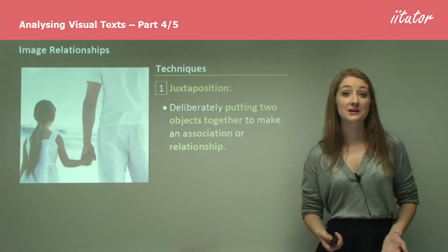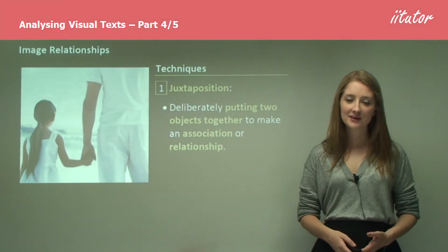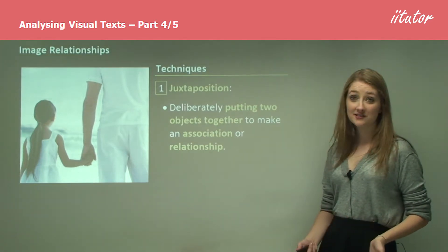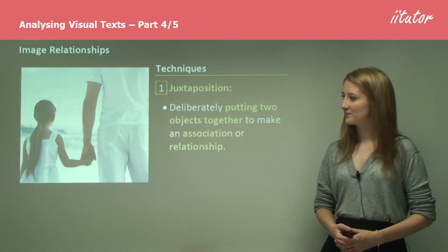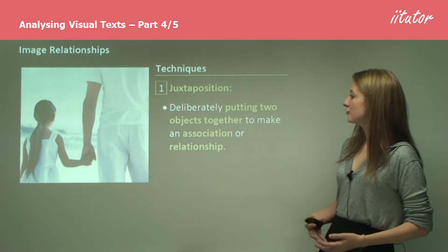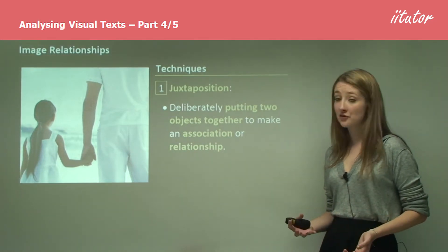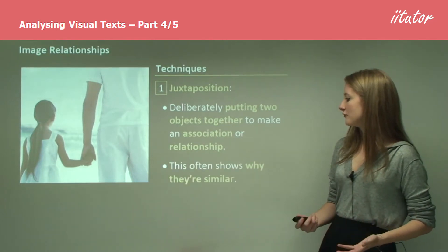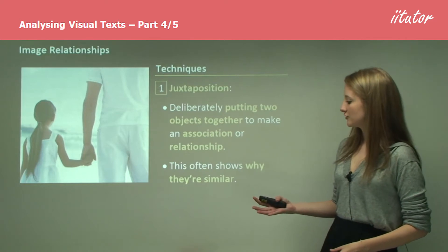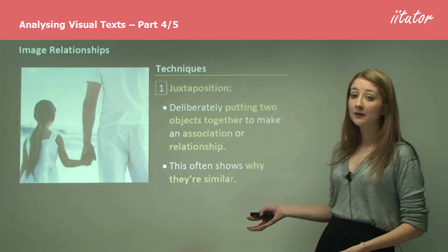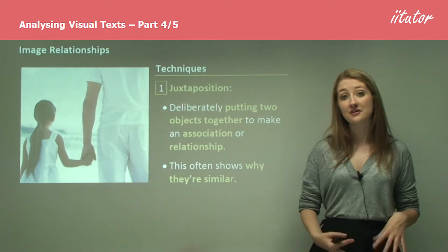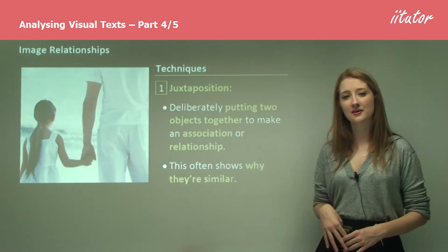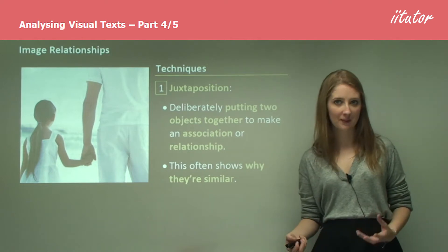Image relationships are another really important element of deconstructing visual texts. So let's look at some specific techniques. Juxtaposition is when you deliberately put two objects together to make an association or relationship. This often shows why they're similar. So in this picture, for example, the tall man with the small girl — they're very different, but the fact that they're placed together clearly shows that they have a strong father-daughter relationship perhaps.